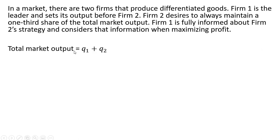The total market output is firm one's output plus firm two's output. Firm two's share of the total market output is firm two's output divided by the total market output. And firm two desires that this total market share equals one-third.